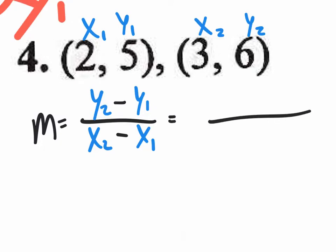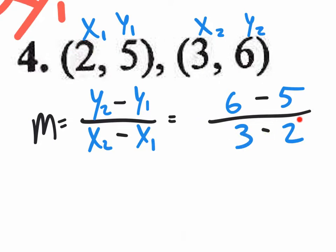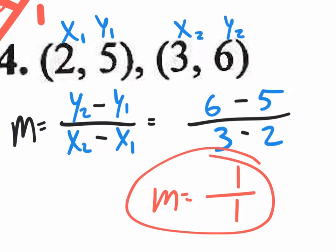Now let's apply the formula. I highly recommend you write the division and subtraction symbols first, then plug in your actual values. Your y2 value is 6 — put that on top. Your y1 value is 5. Your x2 value is 3. Your x1 value is 2. So it's 6 minus 5 over 3 minus 2. Six take away five is one on top; three take away two is one on the bottom. The slope is one over one.